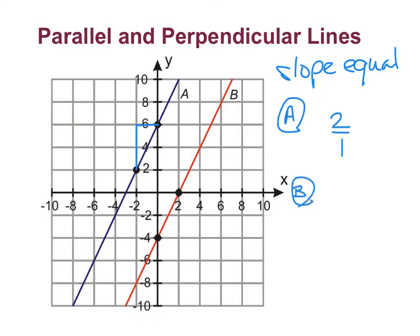Now let's look at line B. Starting at the bottom point, I rise up 1, 2, and I run 1. So the slope is 2 over 1. These have the same slope, so because they have the same slope, they are parallel.